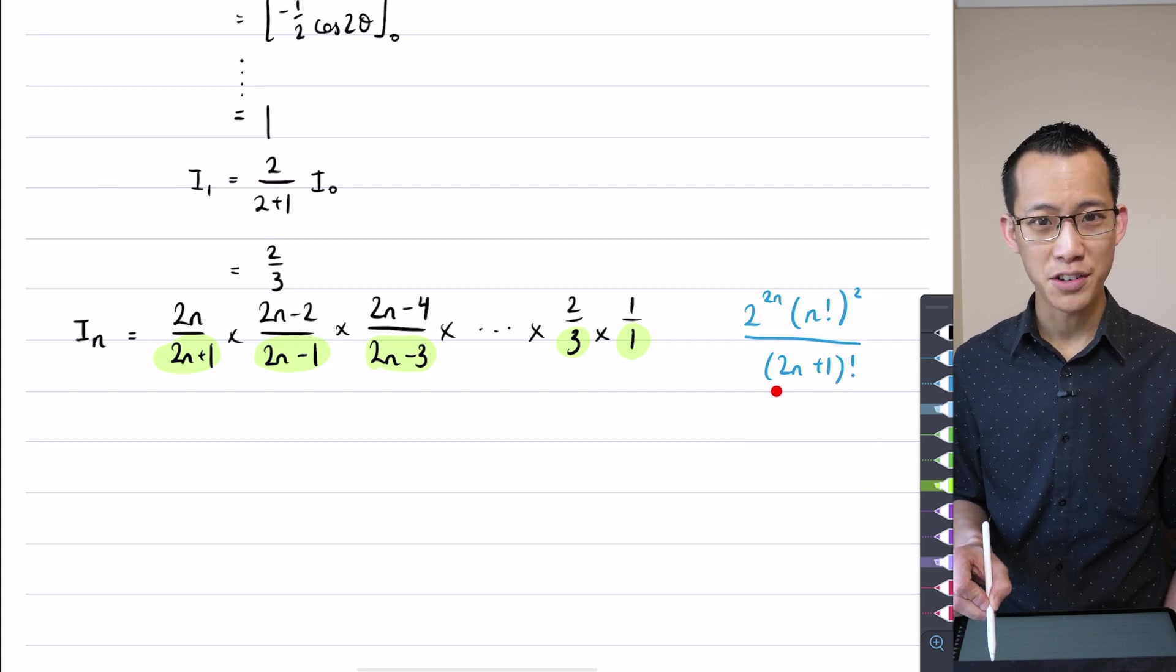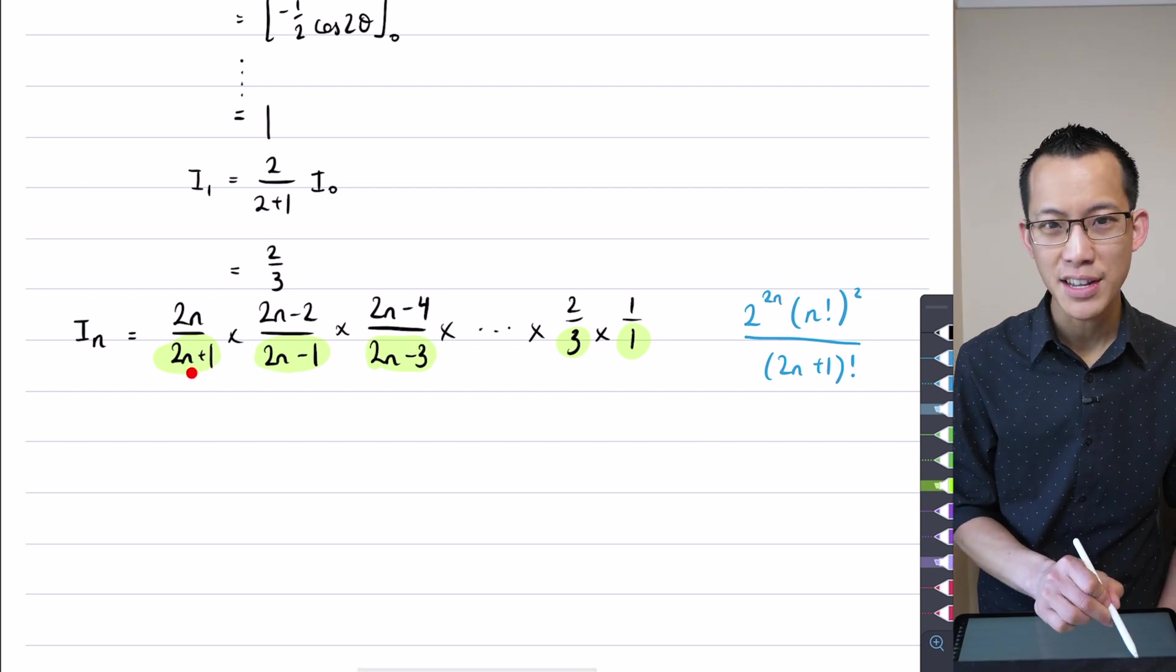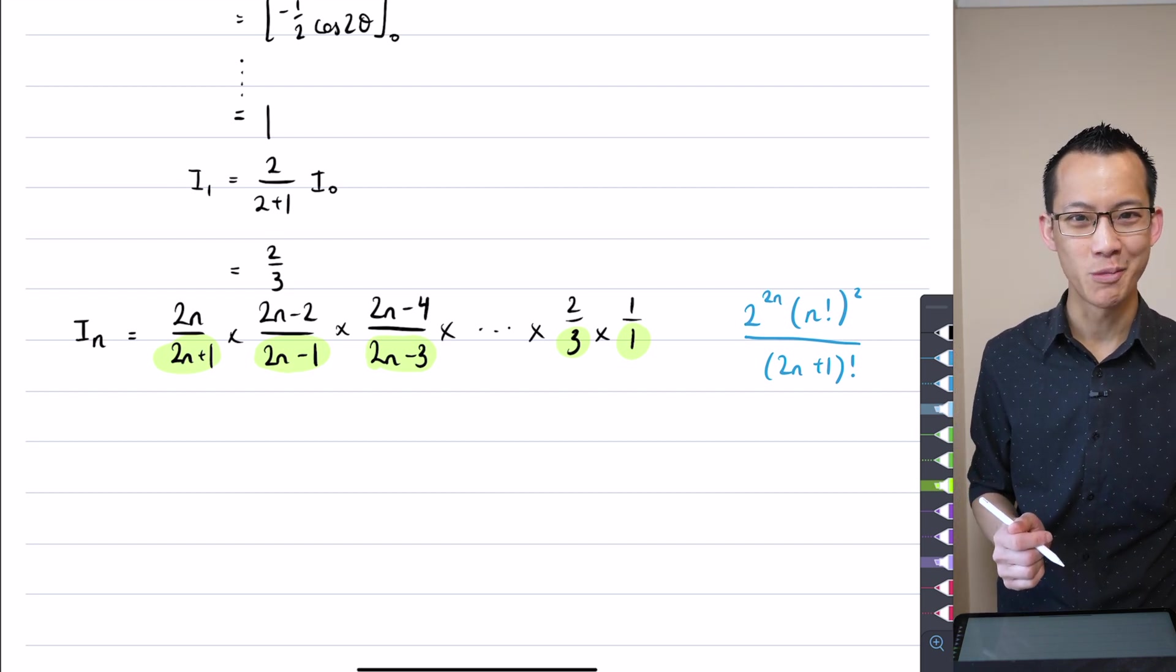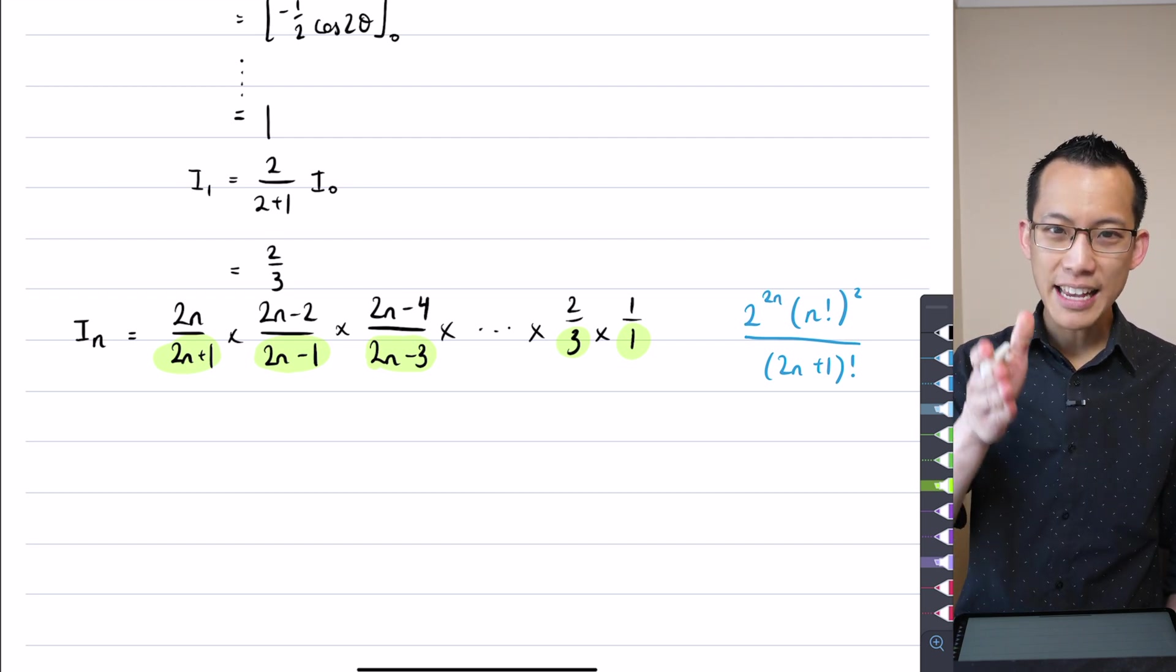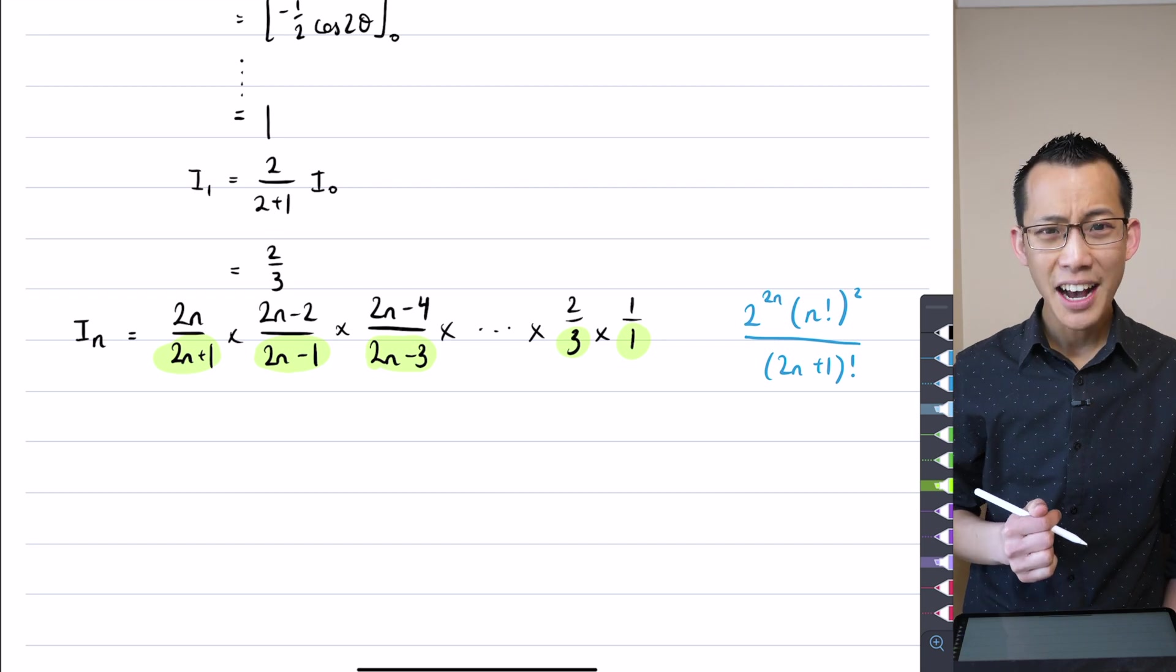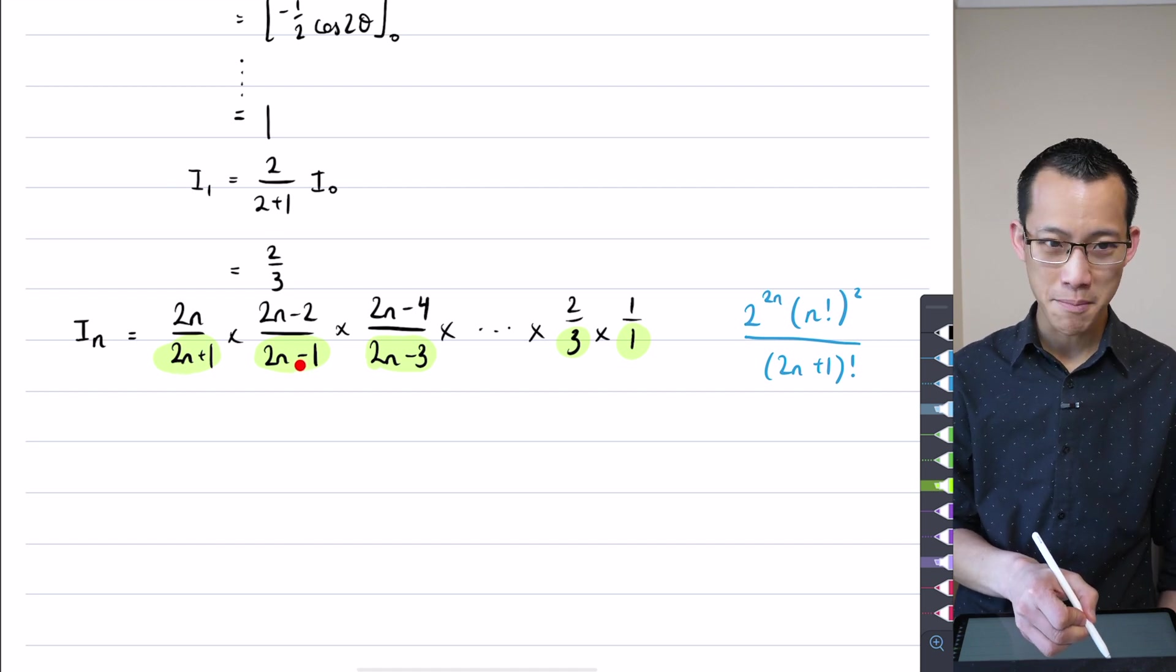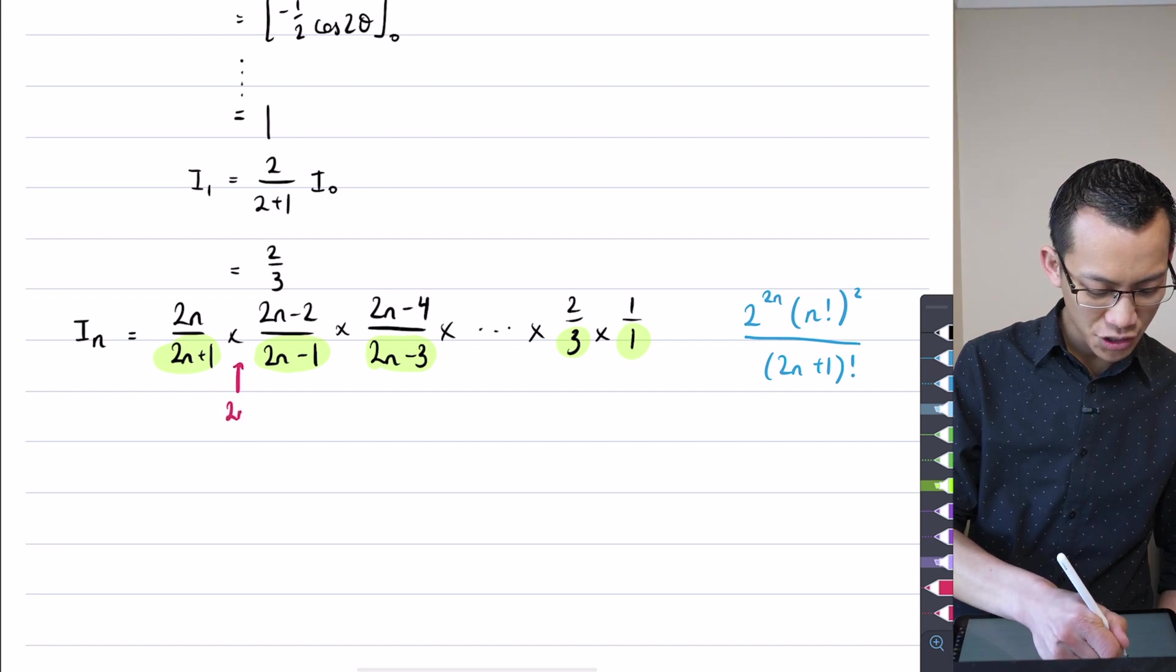Right? I want a 2n plus 1 factorial. 2n plus 1 factorial. It's like so close, right? I've got a 2n plus 1. I start there and I have a 1 at the end. There's just a bunch of things missing from 2n plus 1 factorial, right? 2n plus 1 factorial means I need to include every single number all the way down to 1. I'm missing a lot of numbers. I'm missing exactly half of them, right? You can see there's a number missing in here between 2n plus 1 and 2n minus 1. There should be, right in here, there should be a 2n.